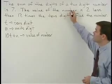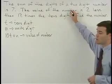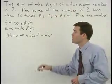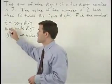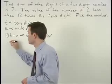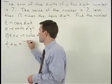Since our first sentence states that the sum of the digits of a two-digit number is seven, that's t plus u equals seven.